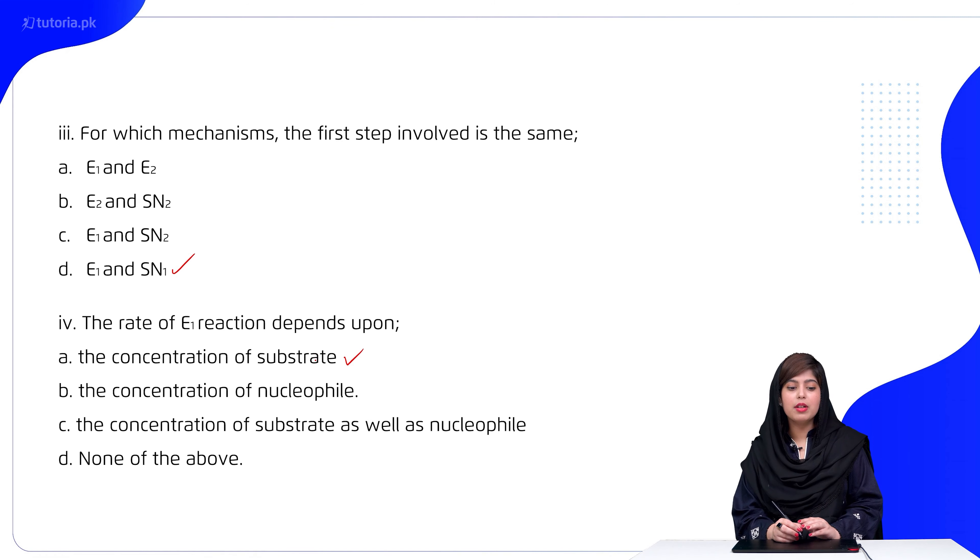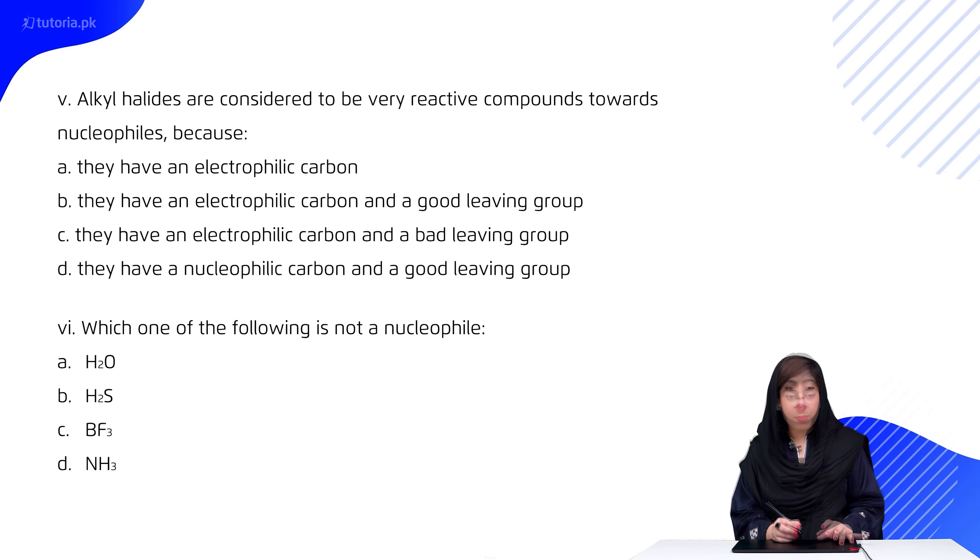Students, alkyl halides are considered to be very reactive compounds towards nucleophiles because: they have an electrophilic carbon; they have an electrophilic carbon and a good leaving group; they have an electrophilic carbon and a bad leaving group; they have a nucleophilic carbon and a good leaving group.